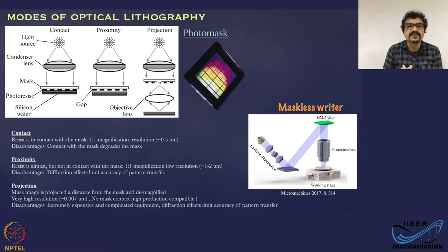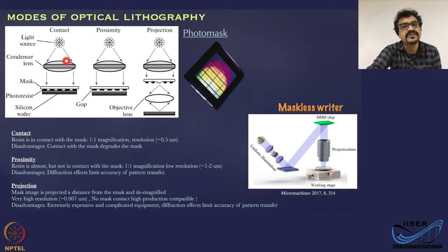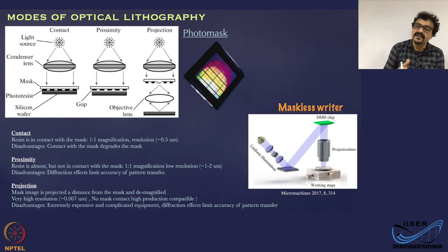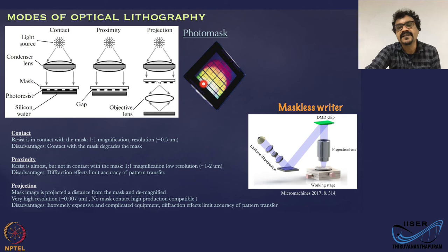Let us look at optical lithography in somewhat more detail. You have a light source, then something called a mask which defines the master pattern, and there is an optical system which gives you a parallel beam. You have a photoresist-coated substrate, and the rest of the process follows as just explained. The mask, which contains the pattern, is a glass or quartz plate coated with chromium, and that chromium has been patterned to the desired shape which gets transferred onto the substrate.